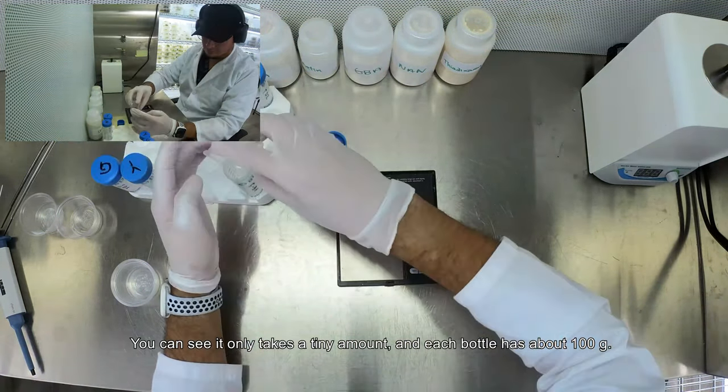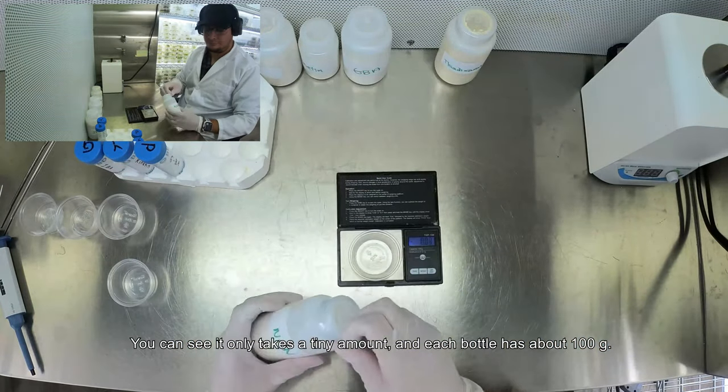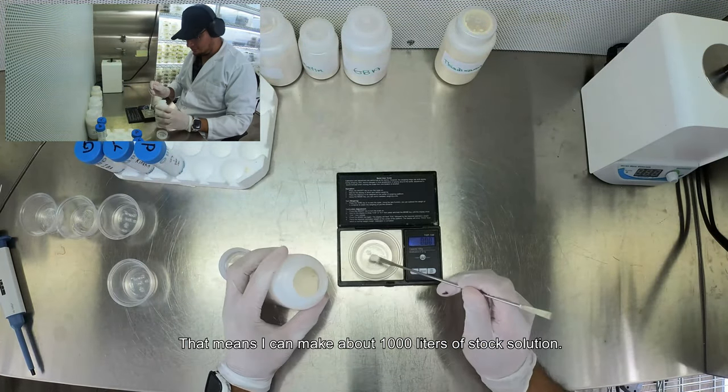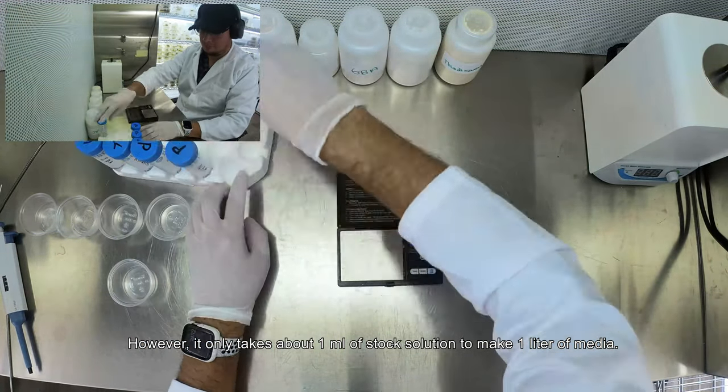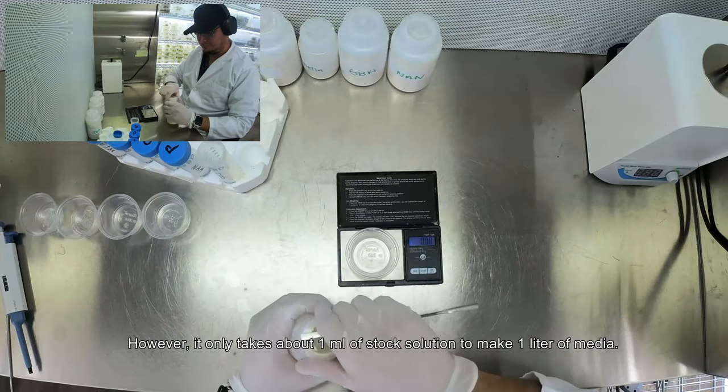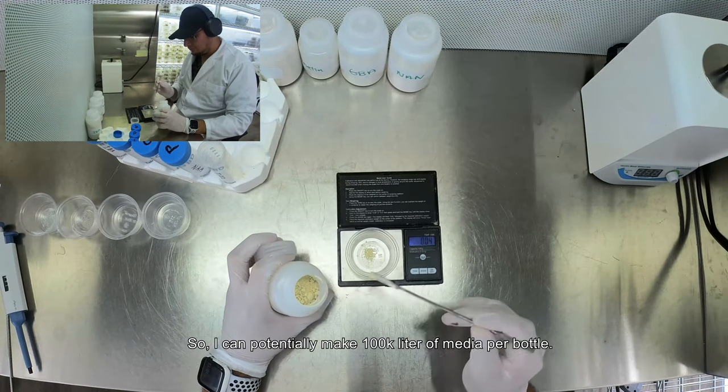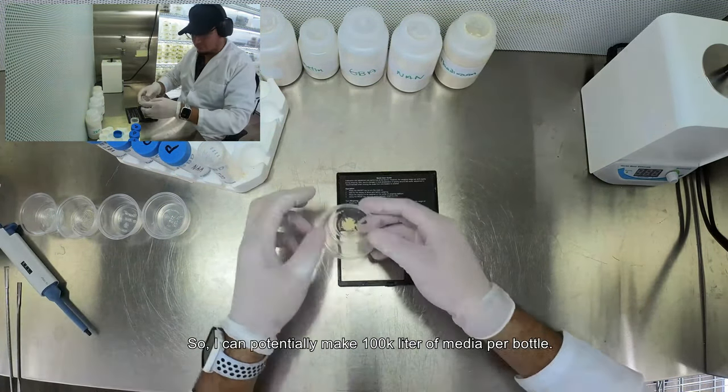You can see it only takes a tiny amount and each bottle has about 100 grams. That means I can make about 1000 liters of stock solution. However, it only takes about 1 ml of stock solution to make 1 liter of media. So I can potentially make 100,000 liters of media per bottle.